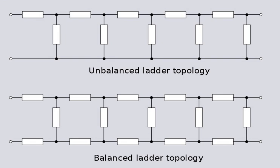The topologies commonly used for filter and attenuator designs include the L section, identical in topology to the potential divider; the T section, identical to the Y-topology; and the π section, identical to the δ topology. All these topologies can be viewed as a short section of a ladder topology. These kinds of circuits are commonly analyzed and characterized in terms of a two-port network.